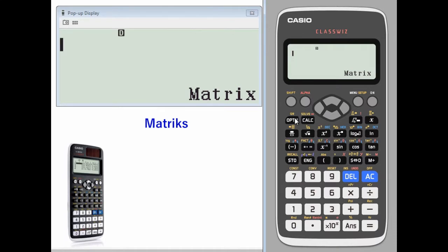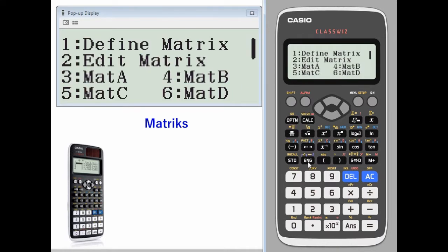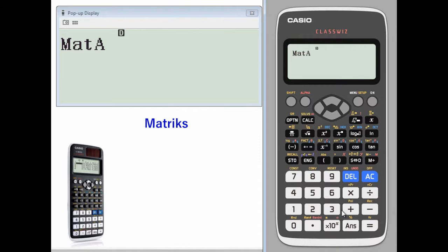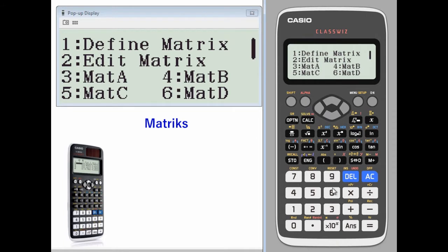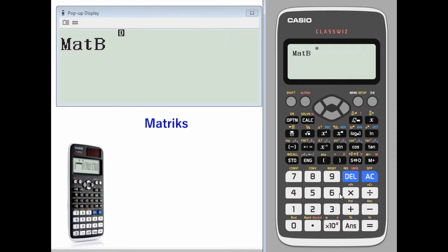Once those values are in, let's add matrices. We'll add matrix A plus matrix B. Now let's multiply our matrices. We'll take matrix B times matrix A.